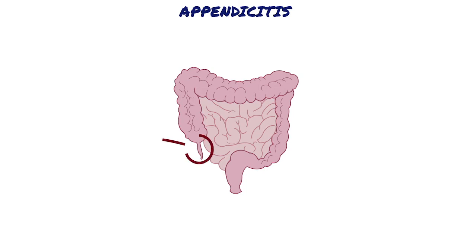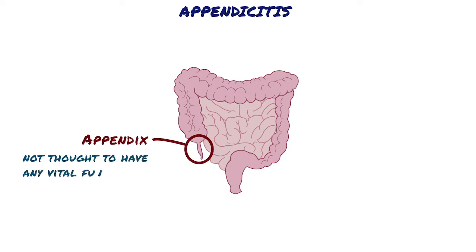The appendix is a narrow, finger-shaped pouch that projects out from the colon. It contains a large amount of lymphoid tissue, but is not thought to have any vital functions in the human body.